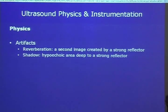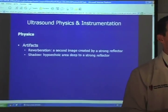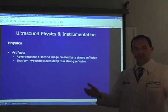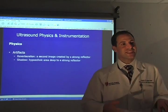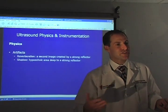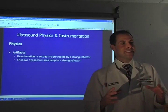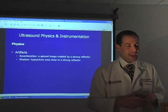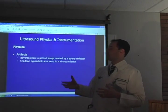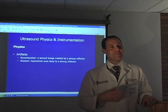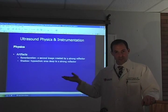Artifact — we're going to talk about shadow and reverberation. Reverberation is when you see a second artifact image created beneath an object that is very highly reflective. Shadow is when you see a hypoechoic area that is deeper to an area that is a strong reflector.